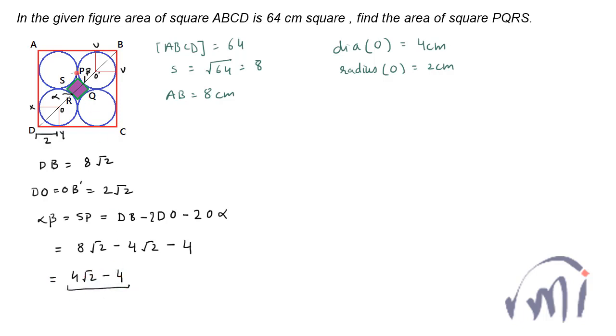So this is the length of each side of the square. So area of square PQRS will be equal to 4 times root 2 minus 1 whole square. I have taken 4 common. This will be square of 4 is 16 and square of root 2 minus 1 will be 2 plus 1 minus 2 root 2. So this will be 16 multiplied by 3 minus 2 root 2 centimeters square. So this is the solution for this problem.